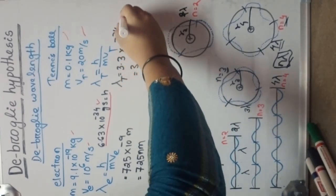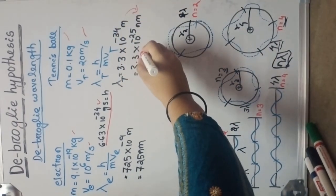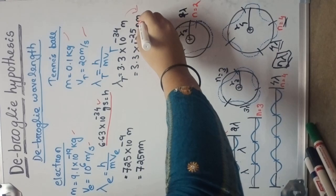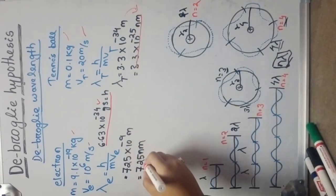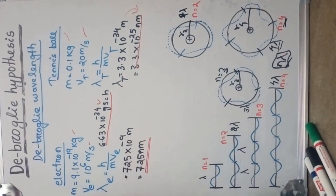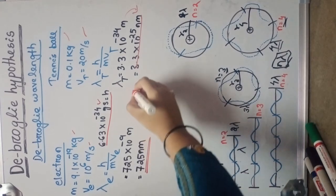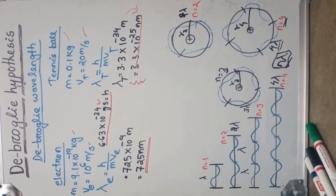The wavelength of the ball is 3.3 into 10 to the power minus 34 meter. Converting to nanometers, that is 3.3 into 10 to the power minus 25 nanometer, whereas the electron wavelength is 725 nanometer. The de Broglie wavelength is very very small in the case of a macroscopic object, so we conclude that de Broglie wavelength is only applicable for microscopic objects.